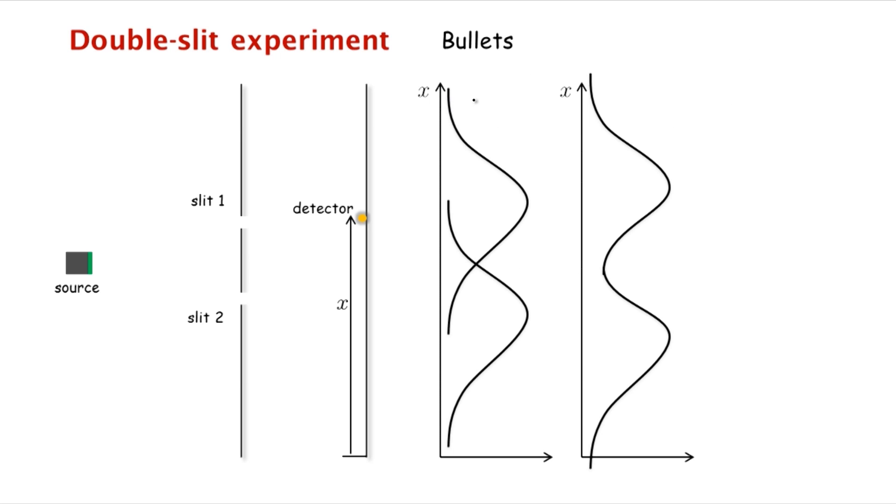So let's perform the experiment with bullets. Let's assume that our source now is a machine gun. We'll assume that this machine gun is somewhat unsteady, so it fires these bullets in some sort of an arc, so they randomly get fired in these directions.